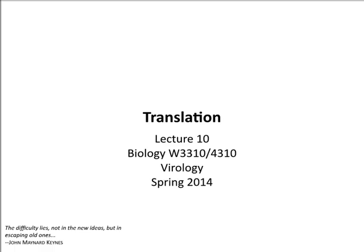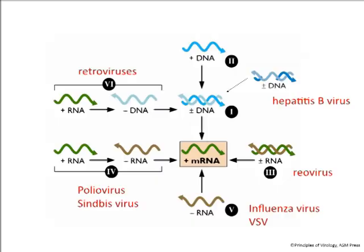I really want to call this lecture 'Lost in Translation,' but I don't want you to be lost — it's not that hard. So here we are with mRNA, the goal of the Baltimore scheme. All viruses have to make mRNA because the protein synthesis machinery they use is that of the cell. None of them can translate proteins on their own.